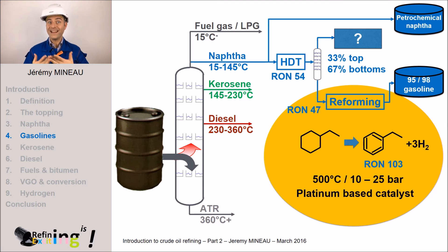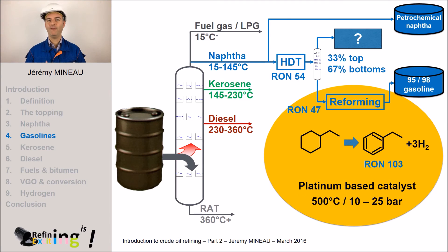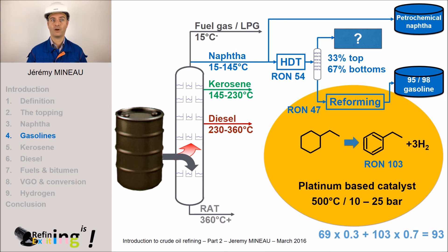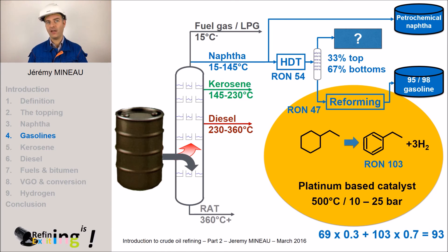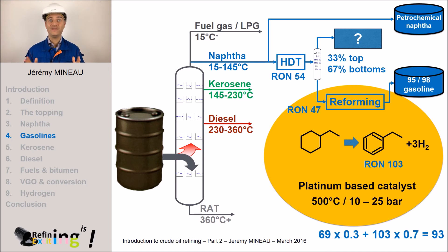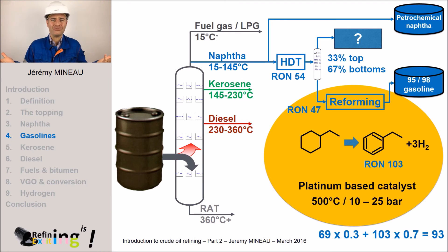But then, what about the light naphtha? If we do a quick calculation, a mixture of 30% at RON 69 and 70% at RON 103 leads to a RON of 93, which is lower than either 95 or 98. So we cannot mix this light naphtha with the reformate, as we would not satisfy the RON of 95 or 98. So what can we do?